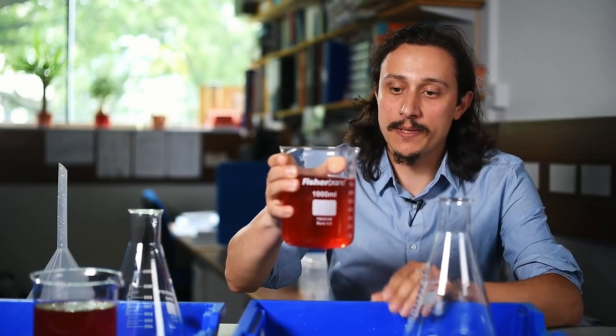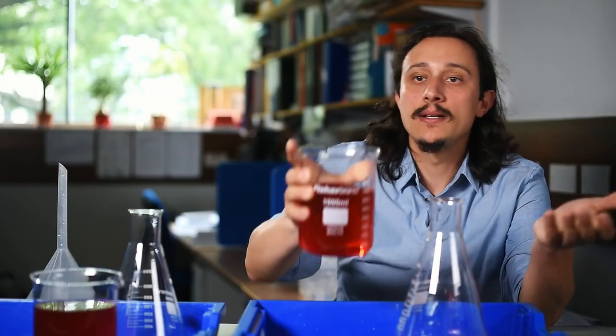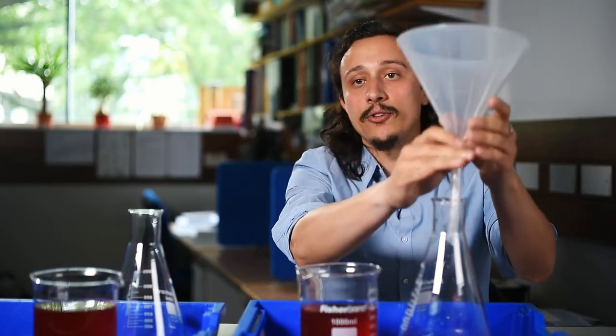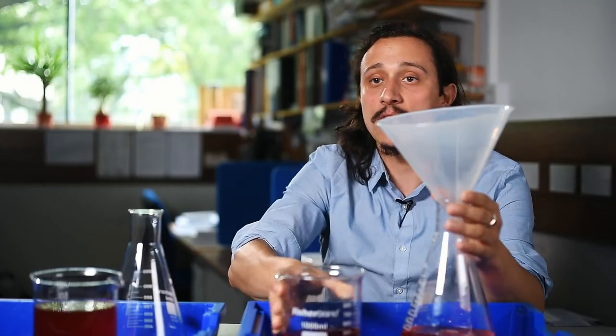Currently, solar energy harvesting works this way. We have the energy coming from the sun, which is represented by this red water, and we are trying to fill our battery by pouring it directly into it. Everything spills out and not much is collected in the battery. What my research does, literally puts a funnel on top of the battery. By doing so, we can actually fill it in a much faster way, obtaining a much higher efficiency.